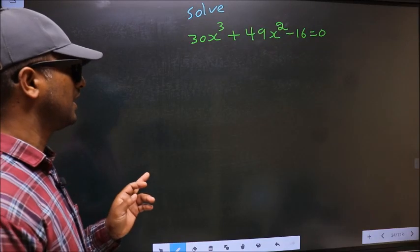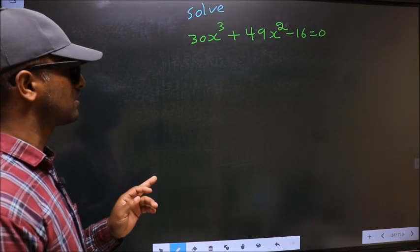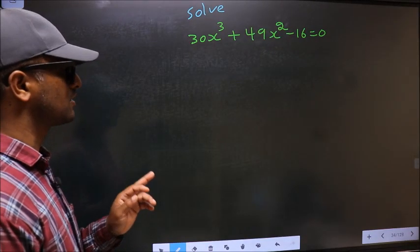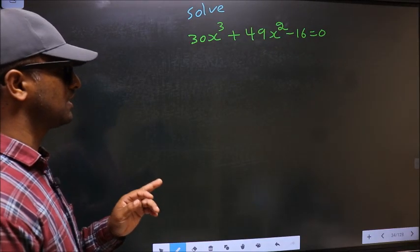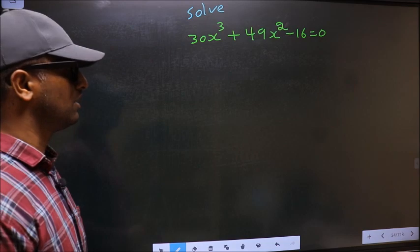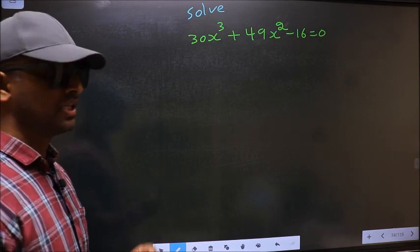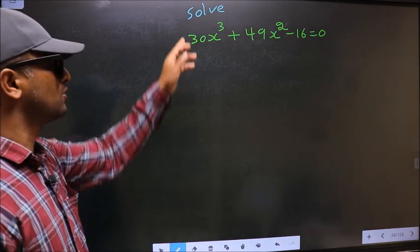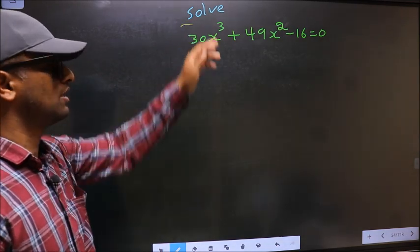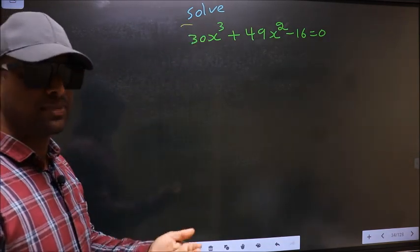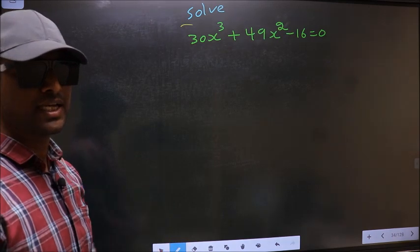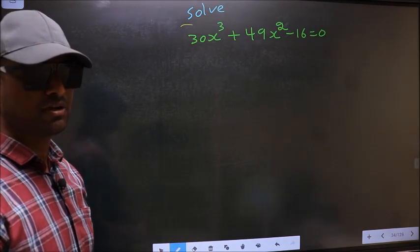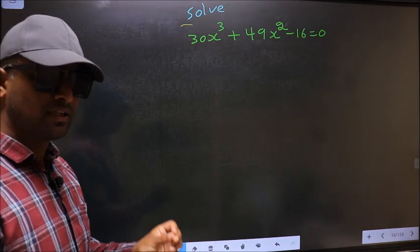Solve 30x³ + 49x² - 16 = 0. Here we are told to solve, which means we should get the values of x.